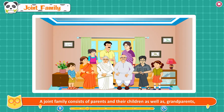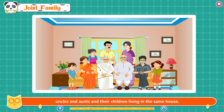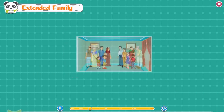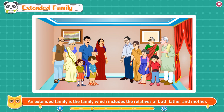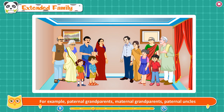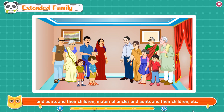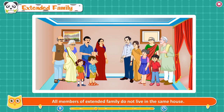Joint family. A joint family consists of parents and their children as well as grandparents, uncles and aunts and their children living in the same house. Extended family. Our parents, brothers and sisters are part of our immediate family. An extended family includes the relatives of both father and mother — for example, paternal grandparents, maternal grandparents, paternal uncles and aunts and their children. All members of an extended family do not live in the same house.